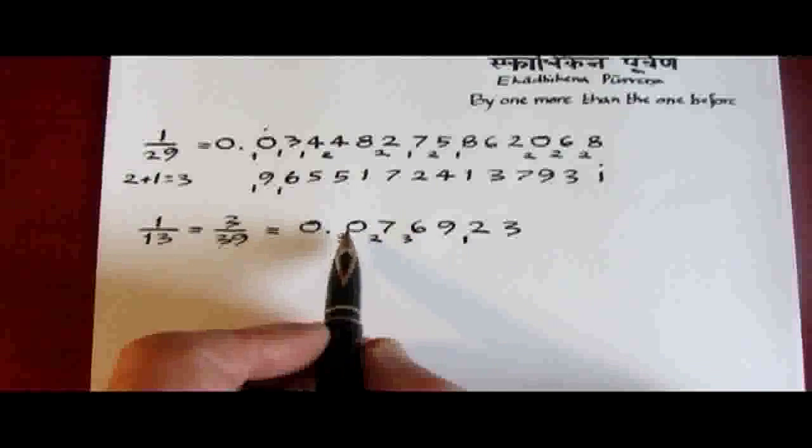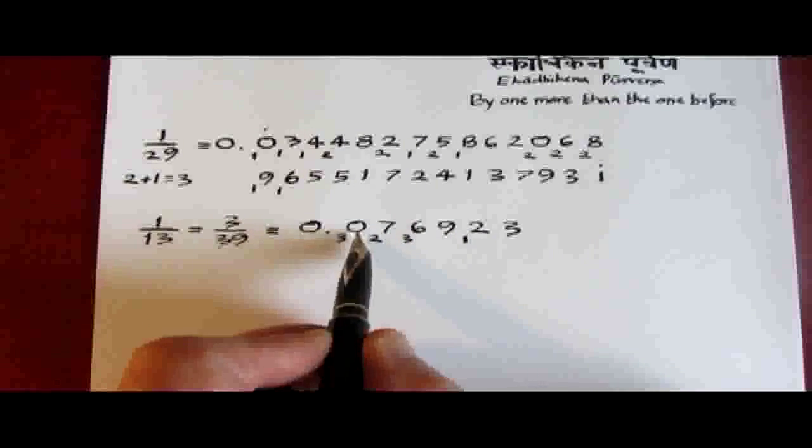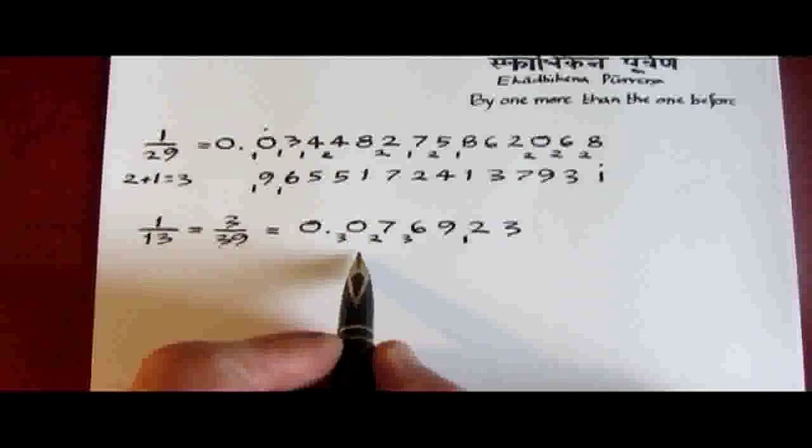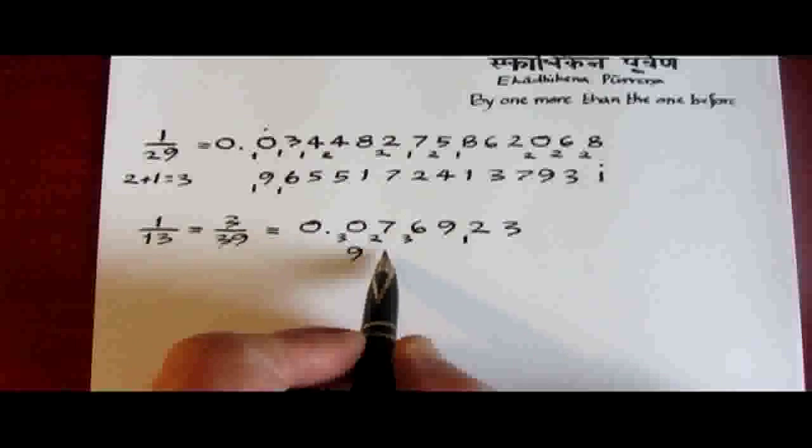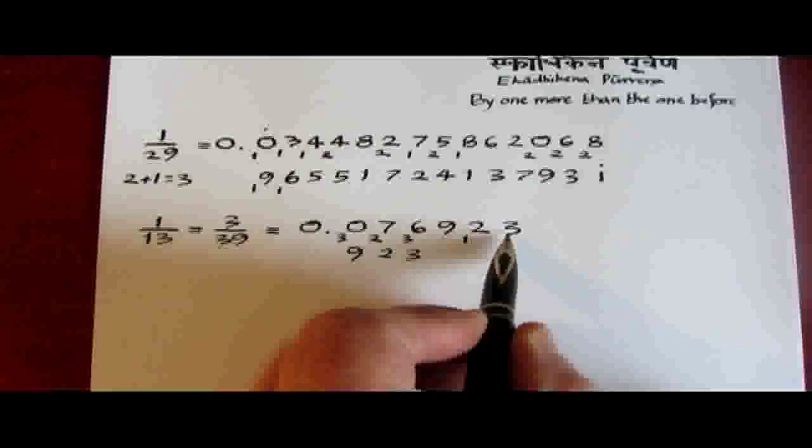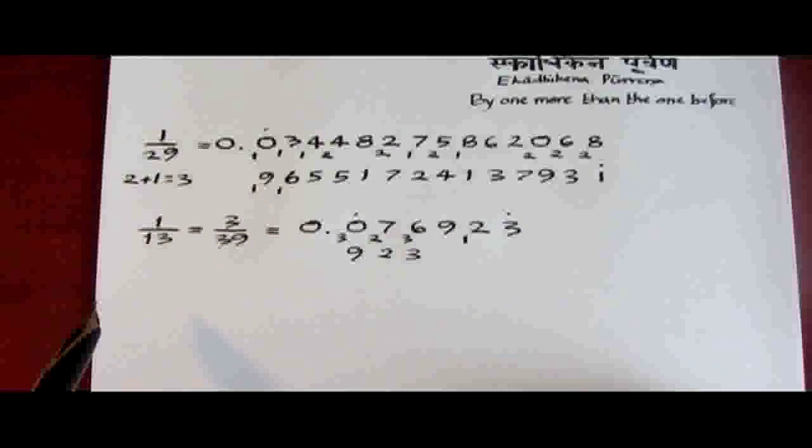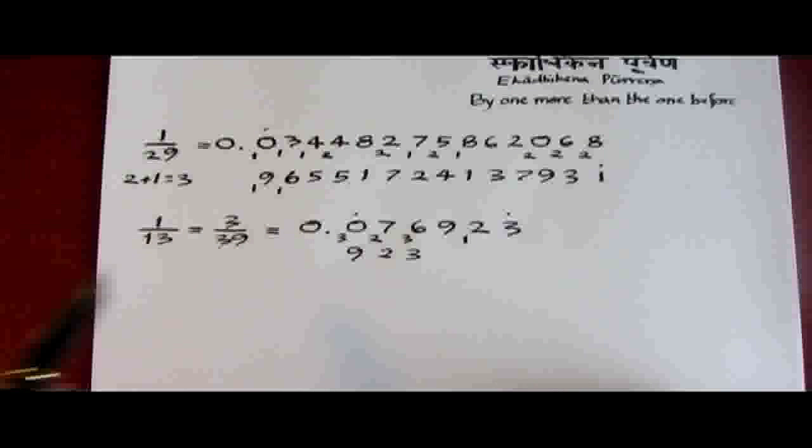And you will notice also the complement digits working here, where we have the 0, 7, 6. And the complements of those three digits are 9, 2, 3, which is what we have in the second half. And so we can put the recurring dots there.